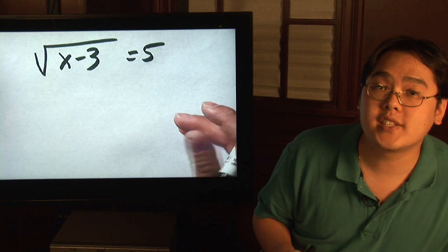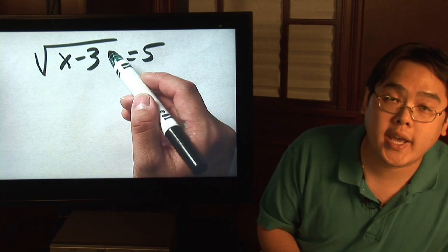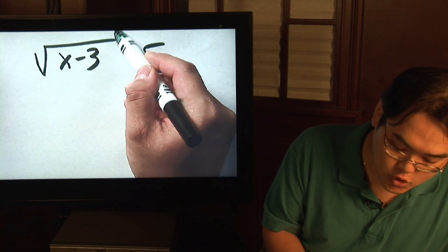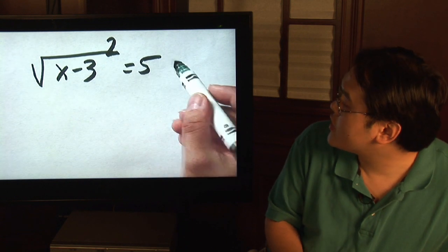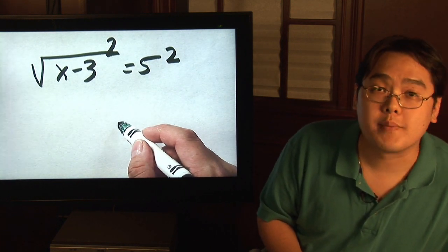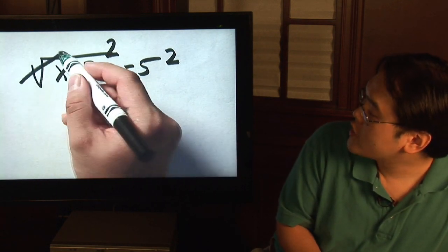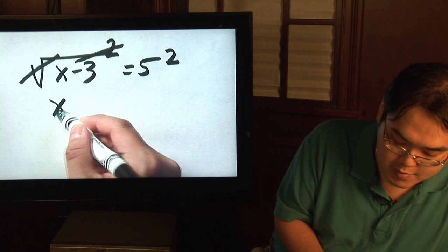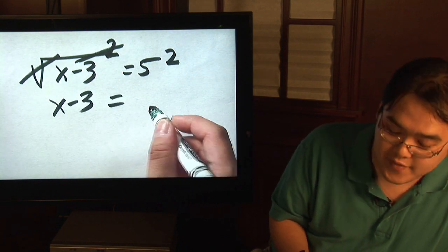Because it's a square root, you want to do the opposite operation. What will cancel out a square root is if you square that side, but if you square this side, because it's an equation, you have to square that side. So what ends up happening is that the square and the square root cancel each other out. So you are left with x minus 3. Now, 5 squared is 25.